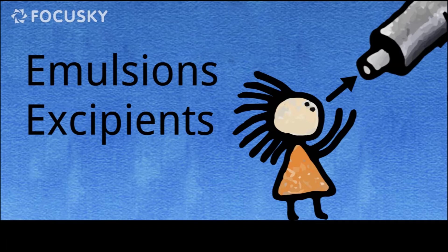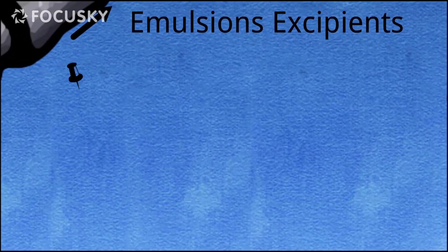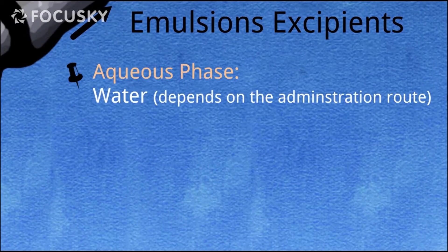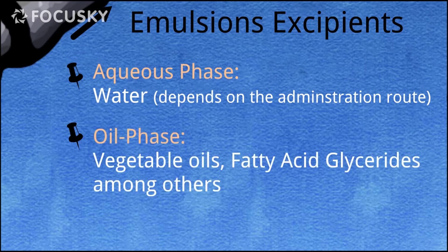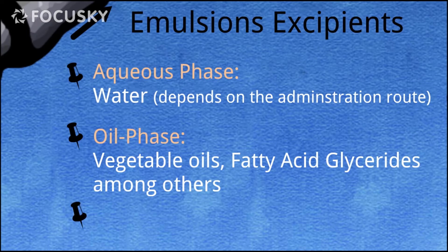I'll assume by now you know the basic components that go into an emulsion: the two phases — the aqueous and the non-aqueous phases — plus the one stabilizing this arrangement, the surfactant. For the aqueous phase, water is used, and depending on the route of administration, different water types are considered. For the non-aqueous part, vegetable oils can be used, and the glycerides of fatty acids are also an option, especially for topical emulsions or creams.